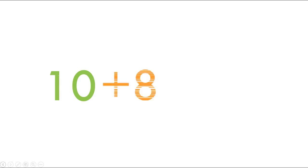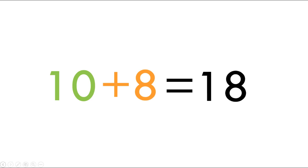Next we're going to do some more number sentences. I have 10 plus eight — what is 10 plus eight? We should get 18. If we hide the zero with the eight, we would get 18. So 10 plus eight equals 18.